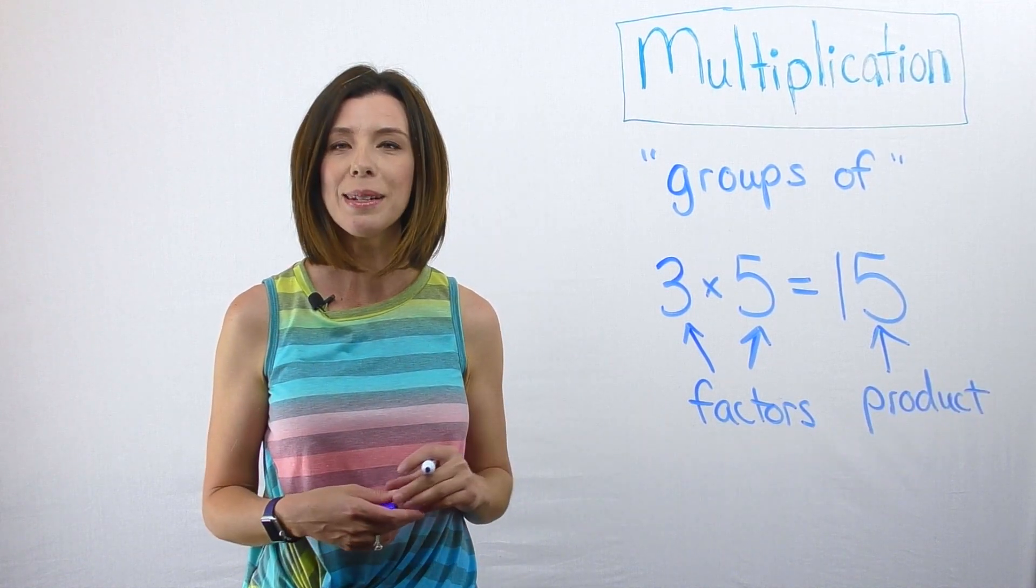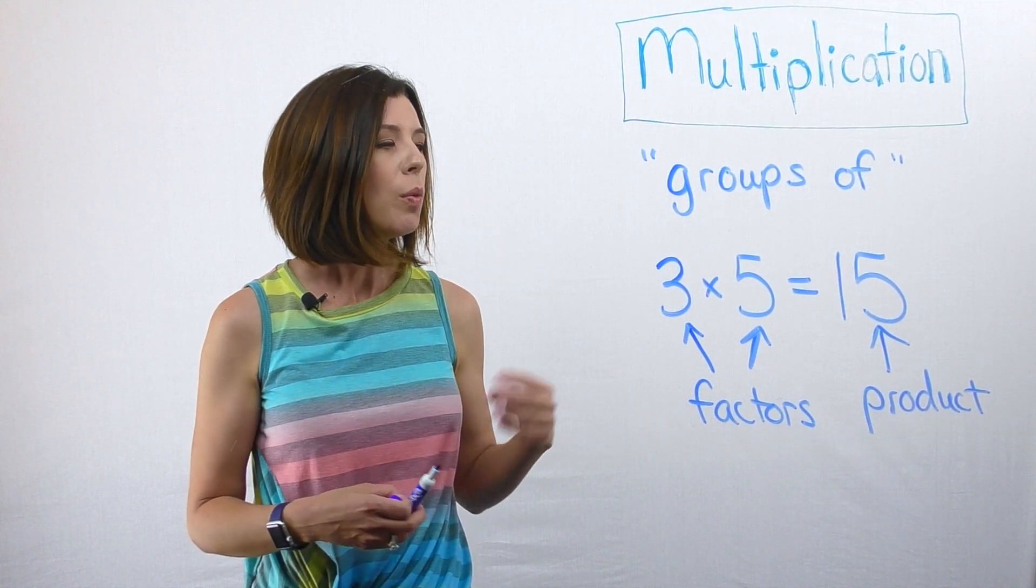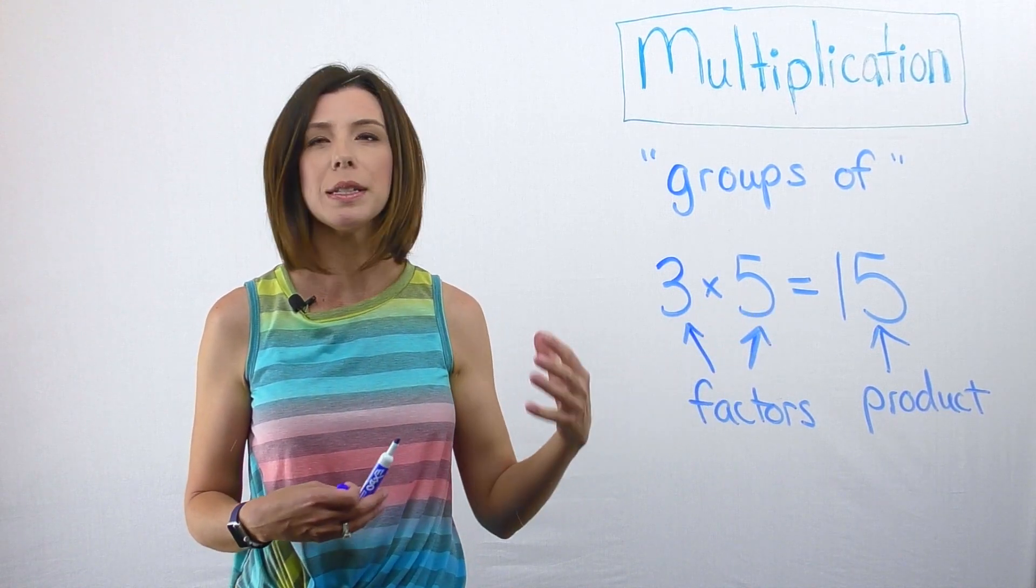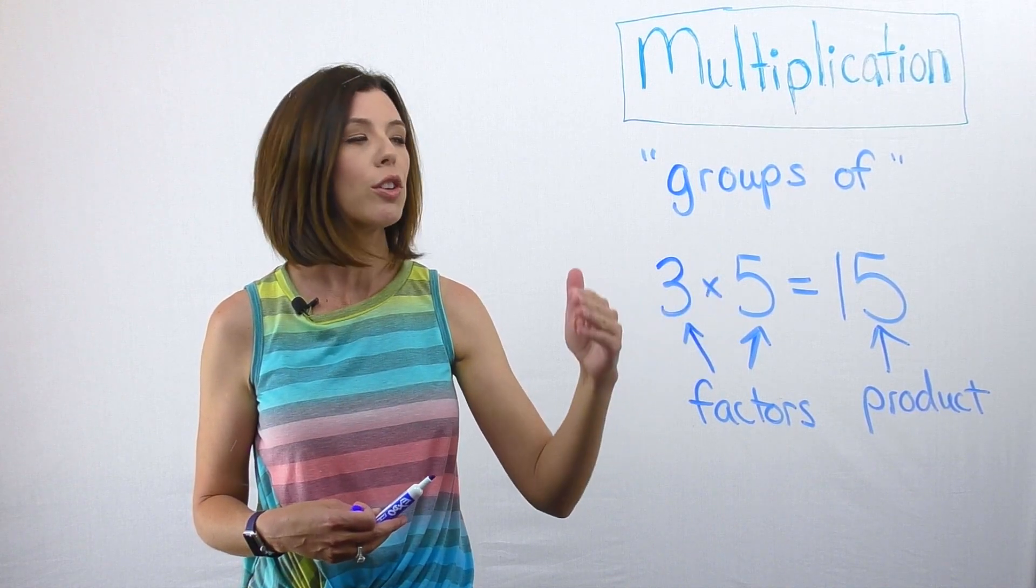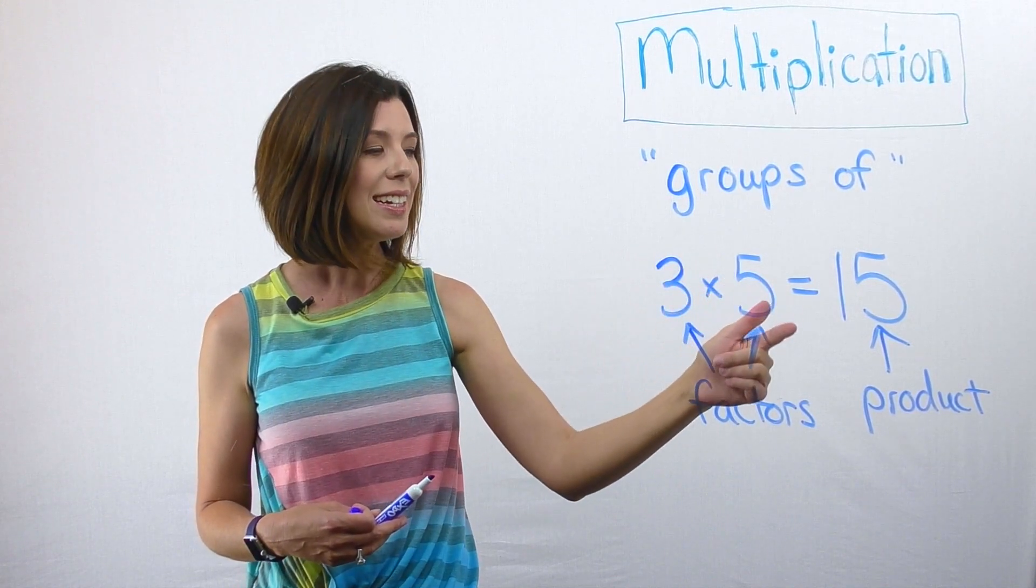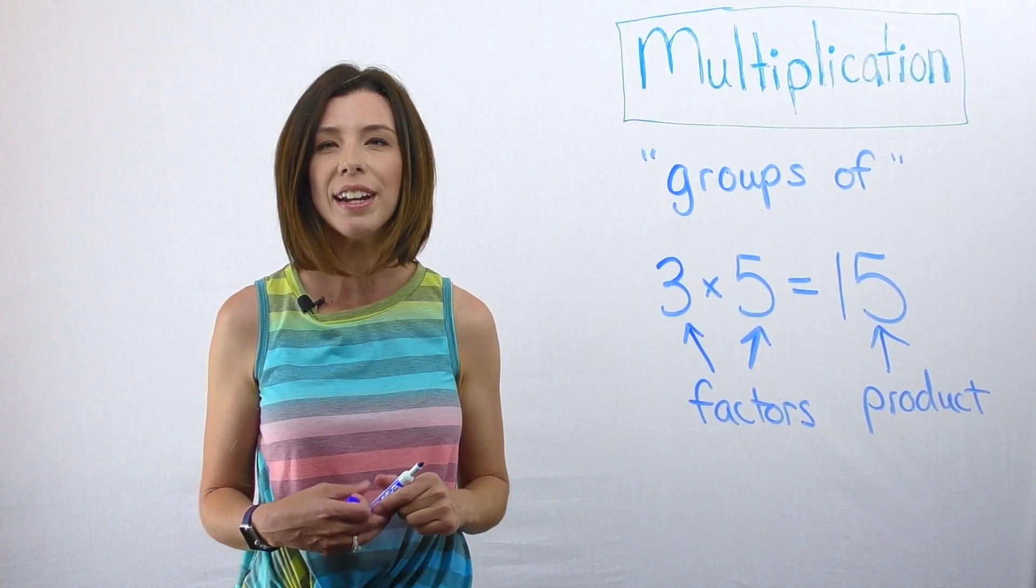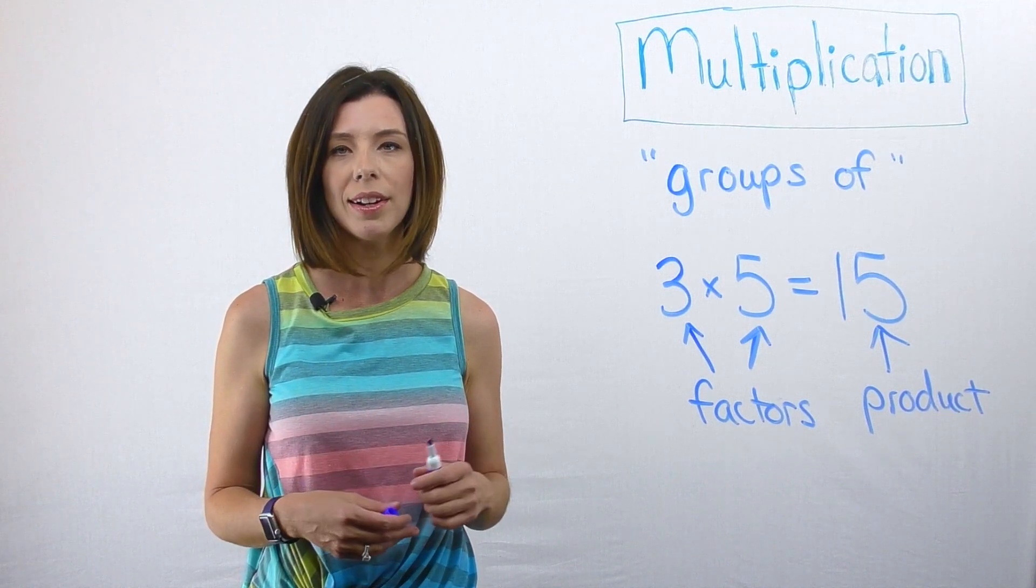The product is simply the answer to the multiplication problem. We can also think of this equal sign as saying it's the same as. So three groups of five or three times five is the same as fifteen. Fifteen being the product in this case.